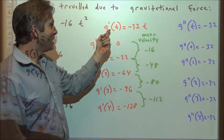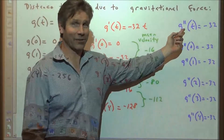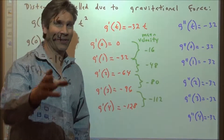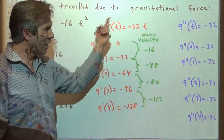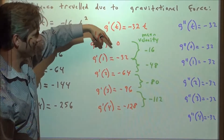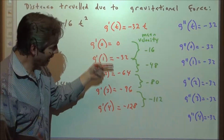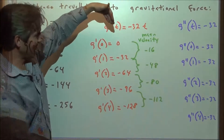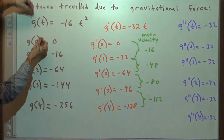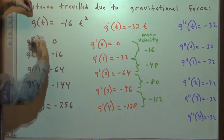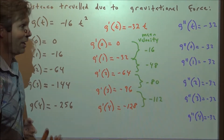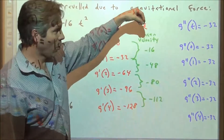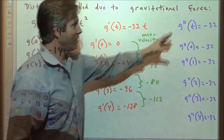Now let's take the first derivative of the velocity function — that's the second derivative of distance. The second derivative is a constant: negative 32. We said in our notes that the second derivative is the rate of change of the rate of change. Every second that goes by, the velocity keeps getting negative 32 feet per second more. So the second derivative describes the rate of change of the first derivative, and the first derivative describes the rate of change of the function. That is acceleration — the object is going 32 feet per second faster and faster as it drops.